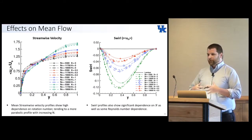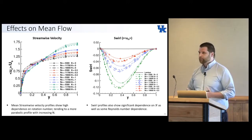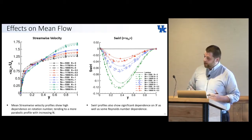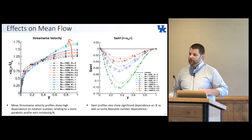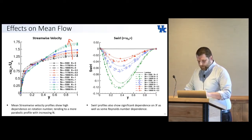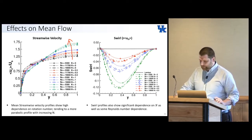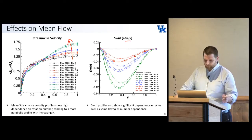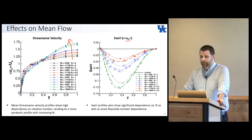People have quantified turbulence suppression in a couple of ways. One is to look at the mean velocity and say it's becoming more laminar — we definitely see that here. As we increase in rotation number N, we start to see a more parabolic profile indicative of laminar flow, highly dependent on rotation rate N with some dependence on Reynolds number but not much. We see a similar trend in swirl — the azimuthal velocity multiplied by the radius — also with a high dependence on rotation rate.